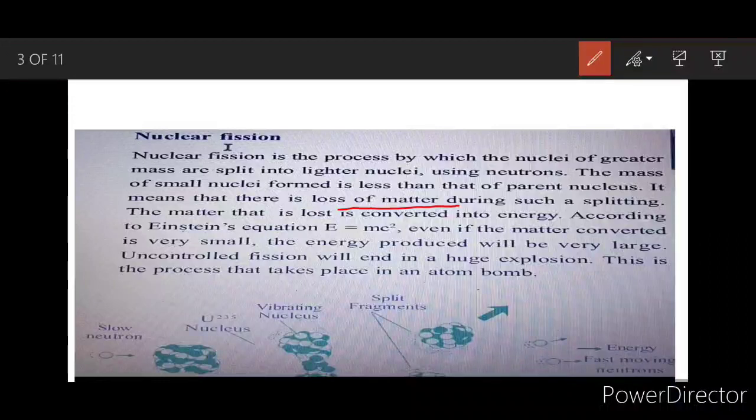This is given by Einstein's equation E equals mc squared, where m is the difference in the mass, c is the velocity of light. Even though the mass difference is very small, as we can see in this equation, the velocity of light is squared, that is 3 into 10 raised to 8 whole square, thus making the energy produced humongous, enormous.